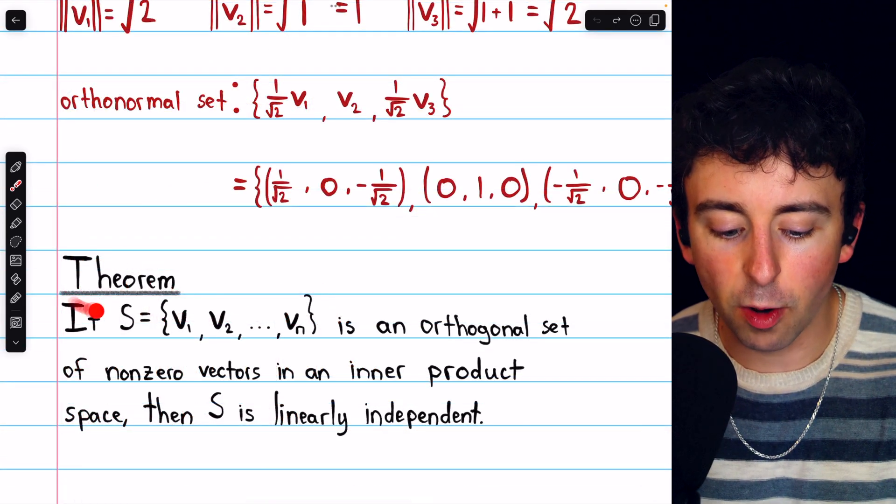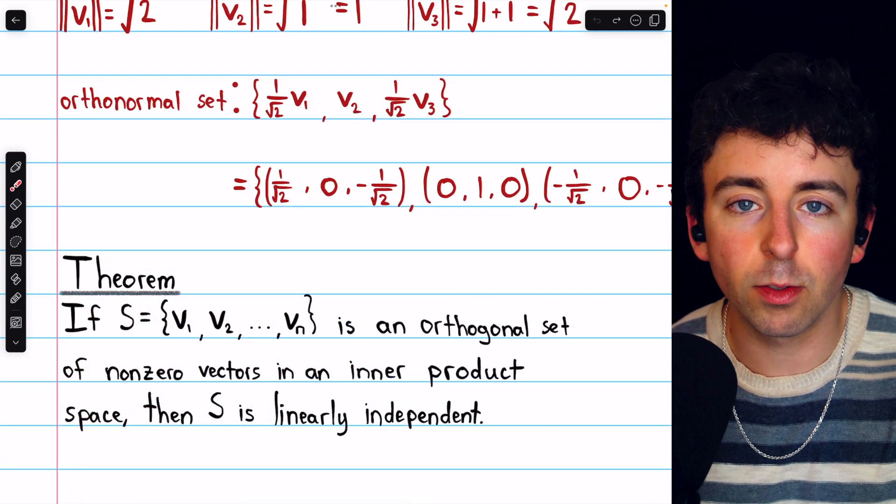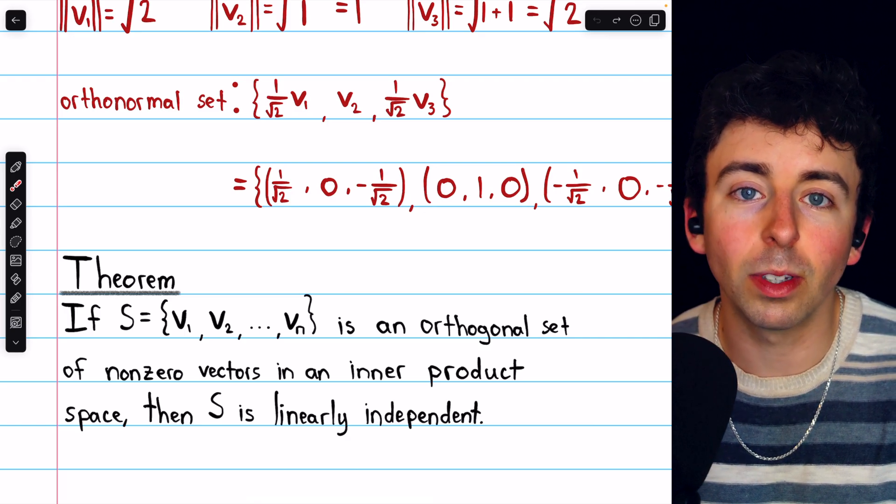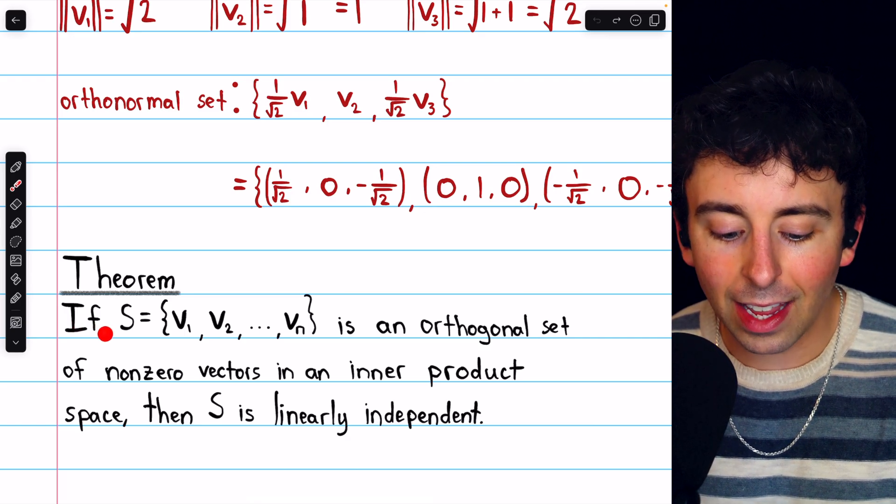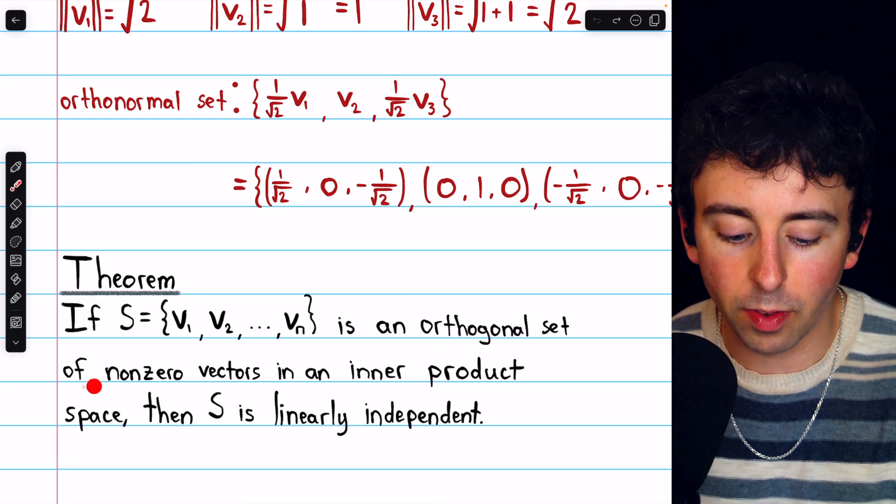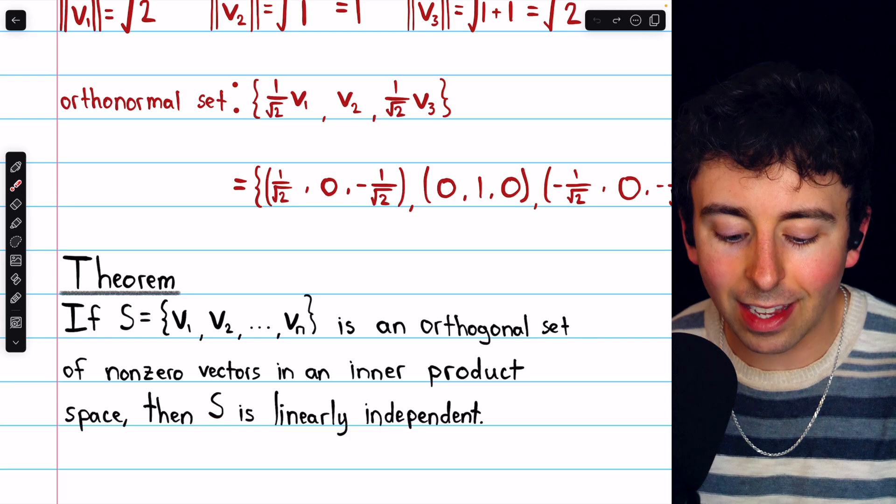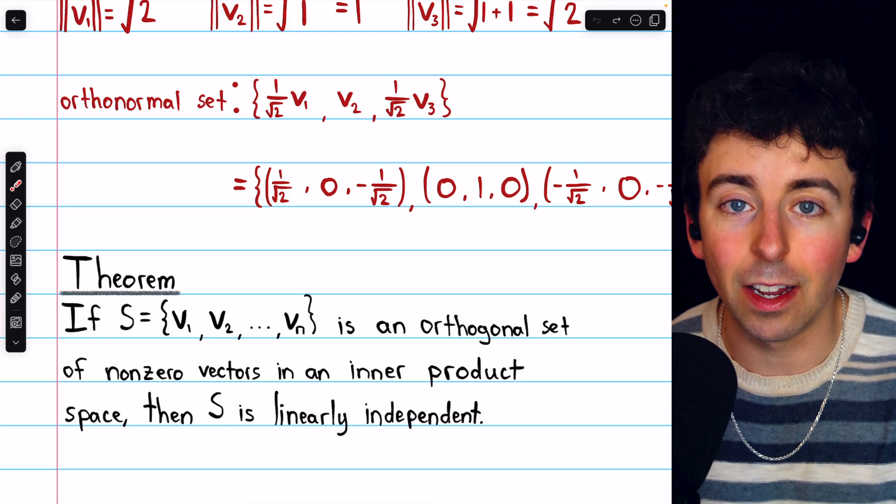Finally, here's a theorem which will be important in our construction of orthogonal and orthonormal bases. We'll prove this in the next video. If S is an orthogonal set of nonzero vectors in an inner product space, then S is linearly independent.